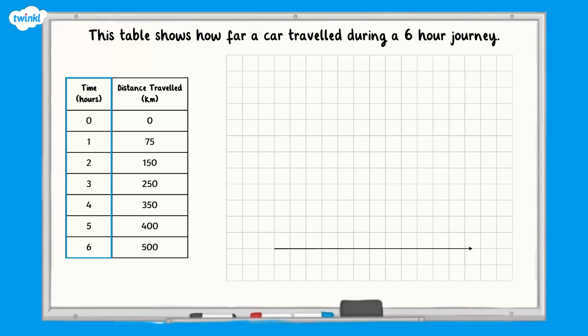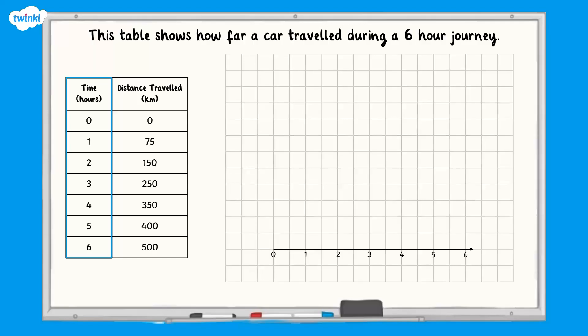We need to make sure we are labeling the lines, not the spaces between the lines. We also need to make sure that the scale on our line is going up in equal steps. Our graph is going up in steps of 1, and 1 is represented by 2 squares.